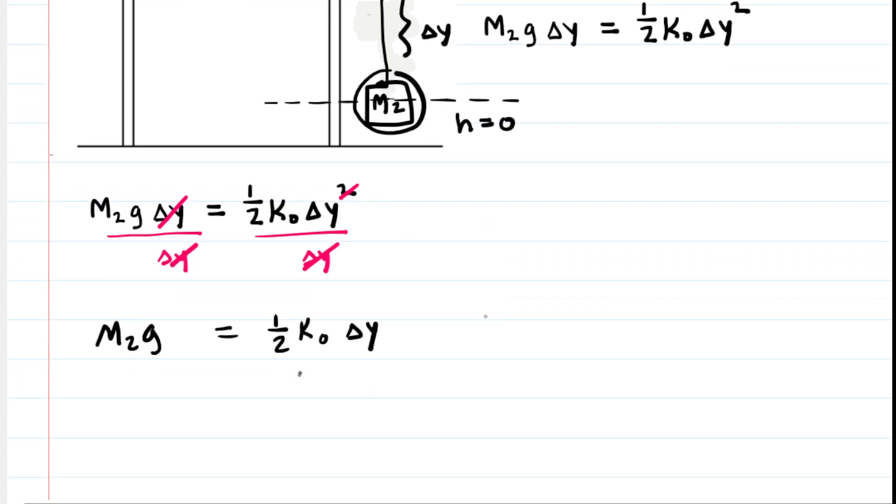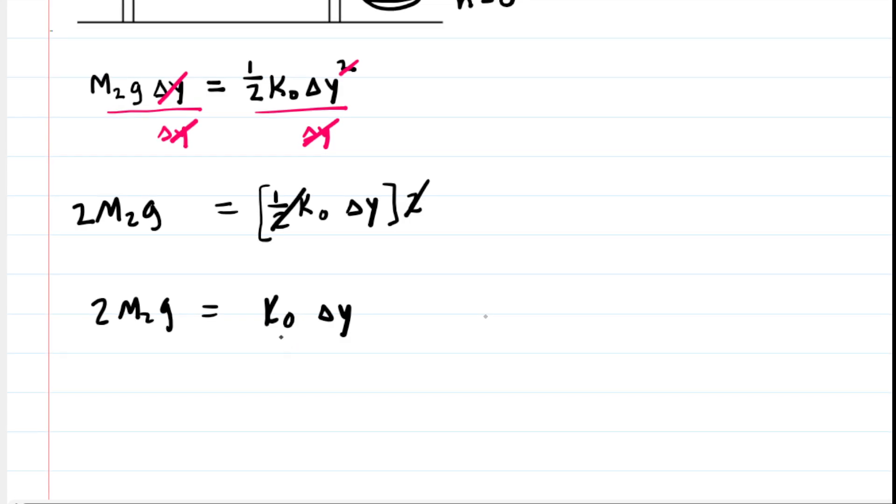Continuing isolating delta y, we can multiply both sides of this equation by 2. Because doing so, when we multiply 2 by 1 half, cancels it out. So now we have 2 M sub 2 g is equal to k naught times delta y. And then finally, we can divide both sides of the equation by the spring constant k naught in order to cancel it out on the right-hand side. So in fact, there we have it. We've isolated delta y.